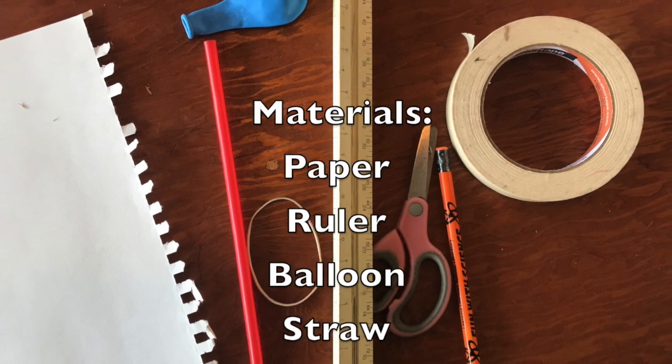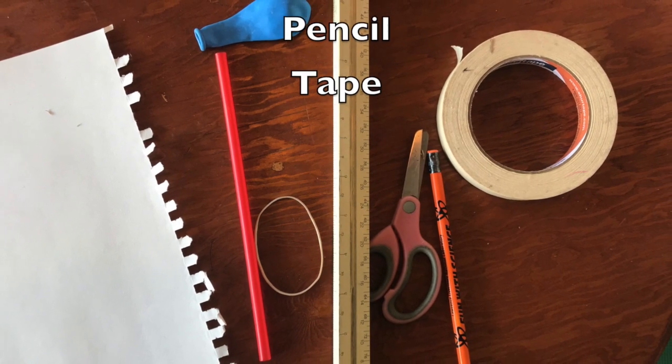The materials that you need are paper, rulers, straw, rubber band, scissors, pencil, and tape.